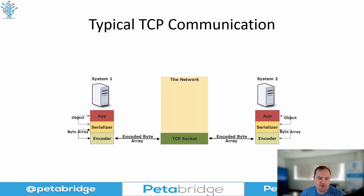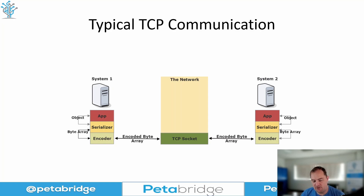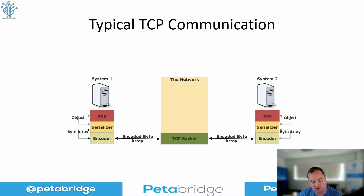The application is going to generate requests — these are just normal objects. These objects, in order to be transmitted to the web server or to the TCP server if you're not using HTTP, they have to be serialized. That means we have to take an HTTP request and turn it into a binary representation — essentially a byte array. That byte array then has to get encoded into the data stream that represents all of the traffic in the TCP socket.